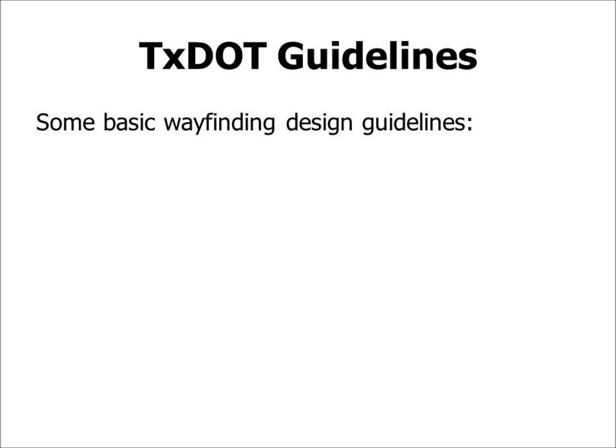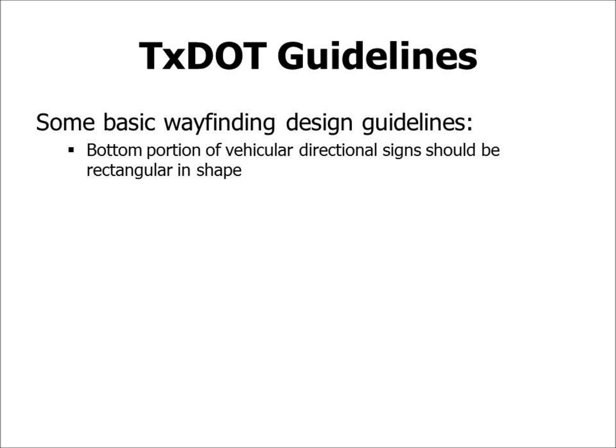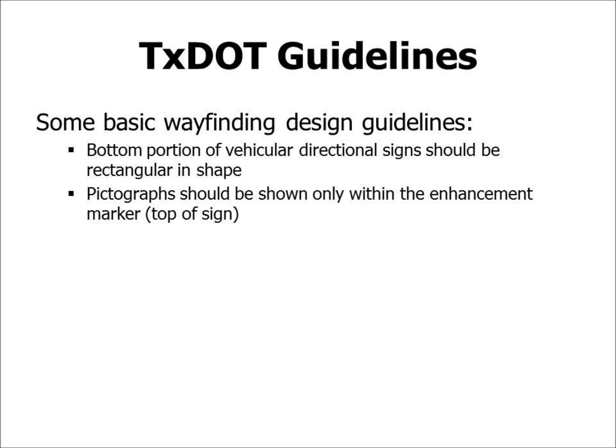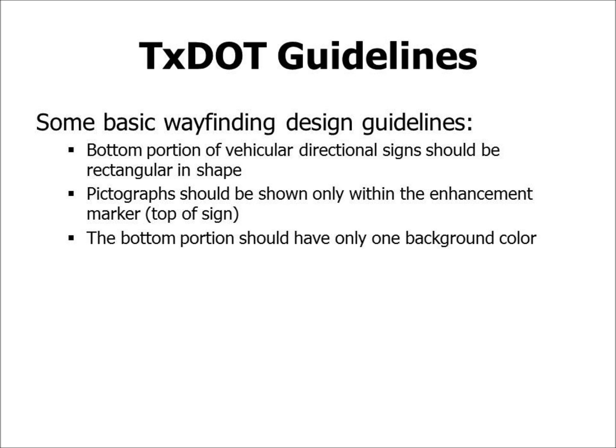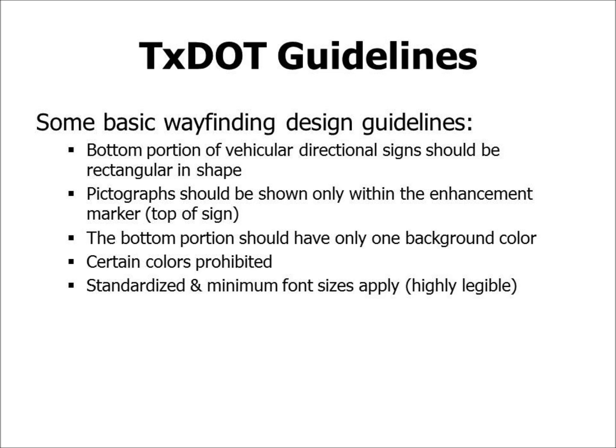TxDOT offers basic wayfinding design guidelines. The bottom portion of vehicular directional signs should be rectangular in shape. Pictographs should be shown only within the enhancement marker at the top of the sign. The bottom portion should have only one background color. Certain colors are prohibited — for example, red is used in stop signs and yellow in school crossings, so those are safety concerns. Standardized and minimum font sizes apply, and signage should be highly legible. TxDOT also offers guidelines for ground supports and mountings.